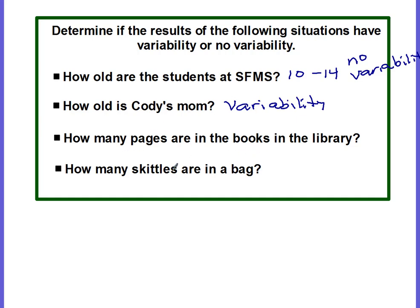How about how many pages are in the books in the library? This one could have a lot of variability too — you could have a book with 20 pages or a book with 214 pages, so I'm going to mark variability. About how many Skittles are in a bag? If you buy 10 bags of Skittles of the same size, there's not going to be a lot of variability — they're all going to have about the same number. So this one would have no variability.